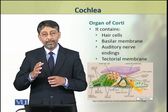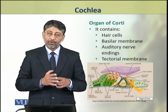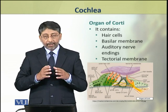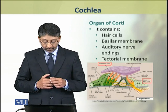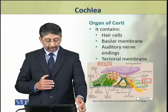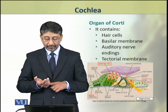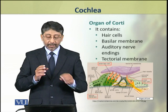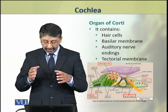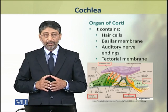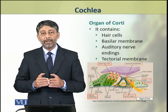We shall discuss the detailed structure of the organ of Corti. It contains hair cells. It also contains on its lower surface a basilar membrane. It is supplied with auditory nerve endings, and on its upper side it has a tectorial membrane.